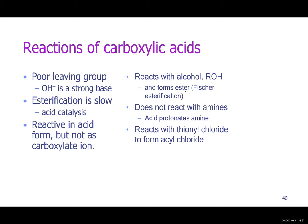Carboxylic acids have a poor leaving group, so esterification is slow — you add a catalyst like 10% sulfuric acid to protonate and speed the reaction. You can use acid catalyst but you can't catalyze it with base, because the carboxylate ion once formed allows the negative charge to stabilize the positive charge on the carbonyl carbon through resonance, making the carbon no longer electrophilic.